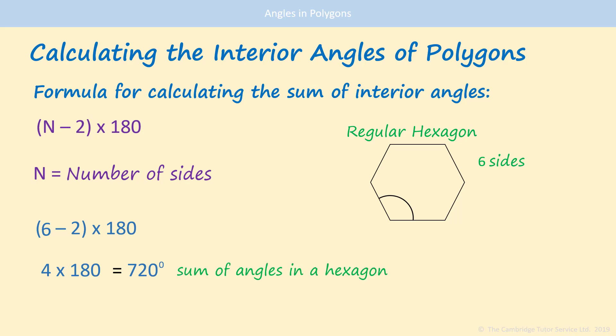Remember that's the sum of all the angles in the hexagon. If we divide 720 by the number of sides, 720 divided by 6 is 120. So that one angle there is 120 degrees.